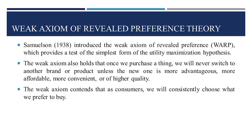Samuelson in 1938 introduced the Weak Axiom of Revealed Preference, i.e. WARP, which provides a test of the simplest form of the utility maximization hypothesis. If a bundle X is revealed preferred over a bundle Y, then at some other instance, Y should not be revealed preferred over X.